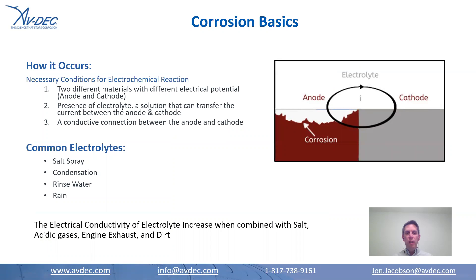There are some necessary conditions you need for corrosion to start. You need an electrochemical reaction. You need two different materials that have a different electrical potential — an anode and a cathode. You need a presence of an electrolyte or a solution that can transfer that current between the anode and cathode. And then you need a conductive connection between the anode and cathode, so the anode and cathode need to be touching each other. Some of your common electrolytes are salt spray, condensation, rinse water, and rain.